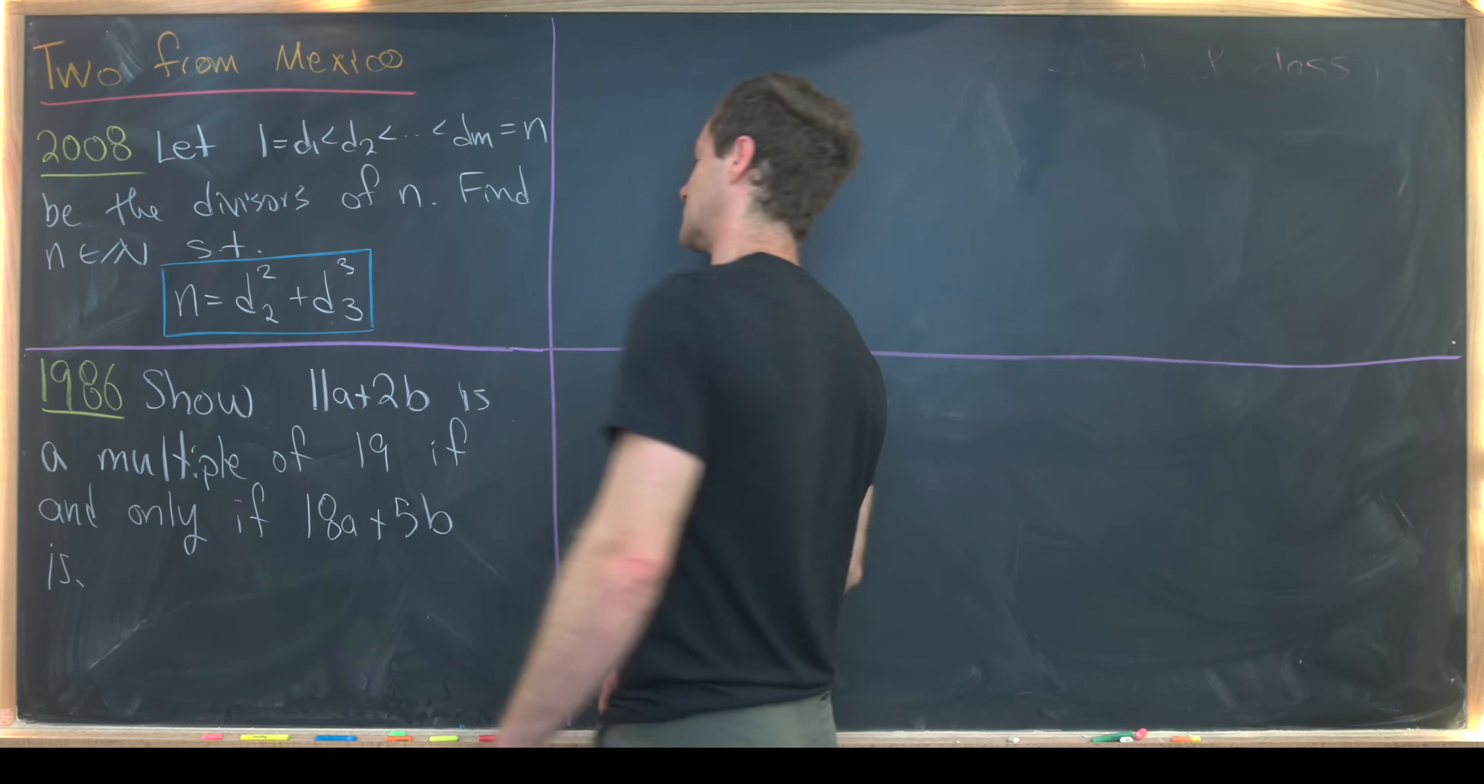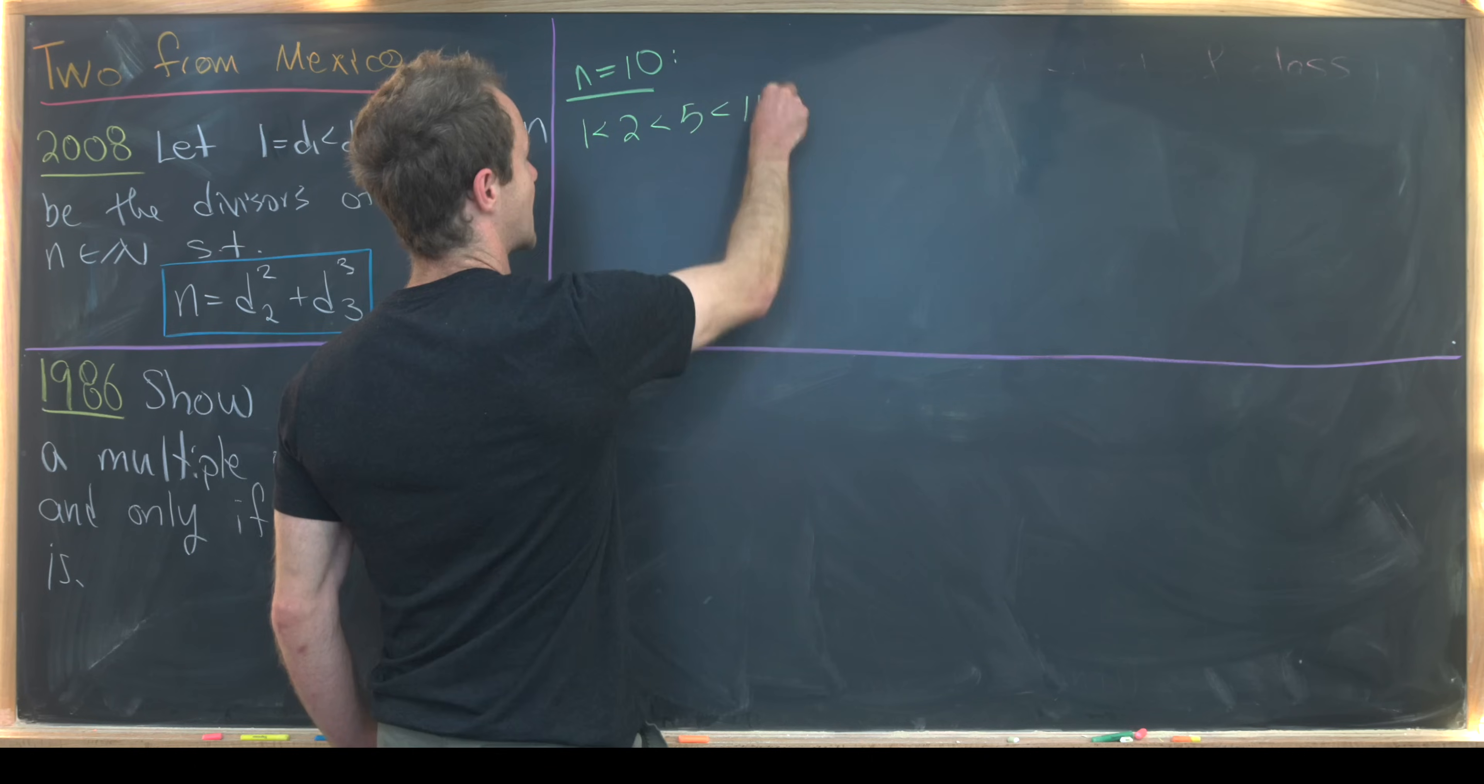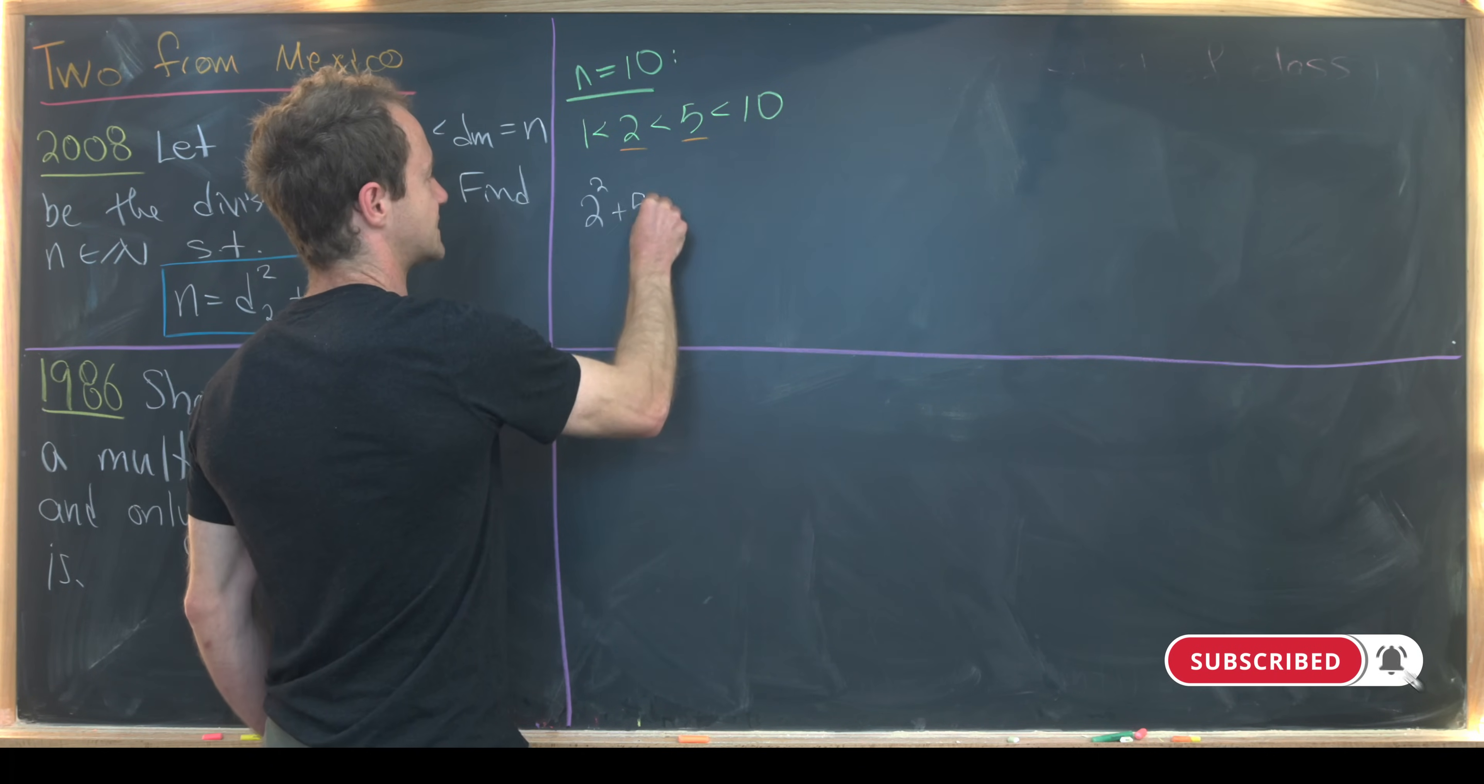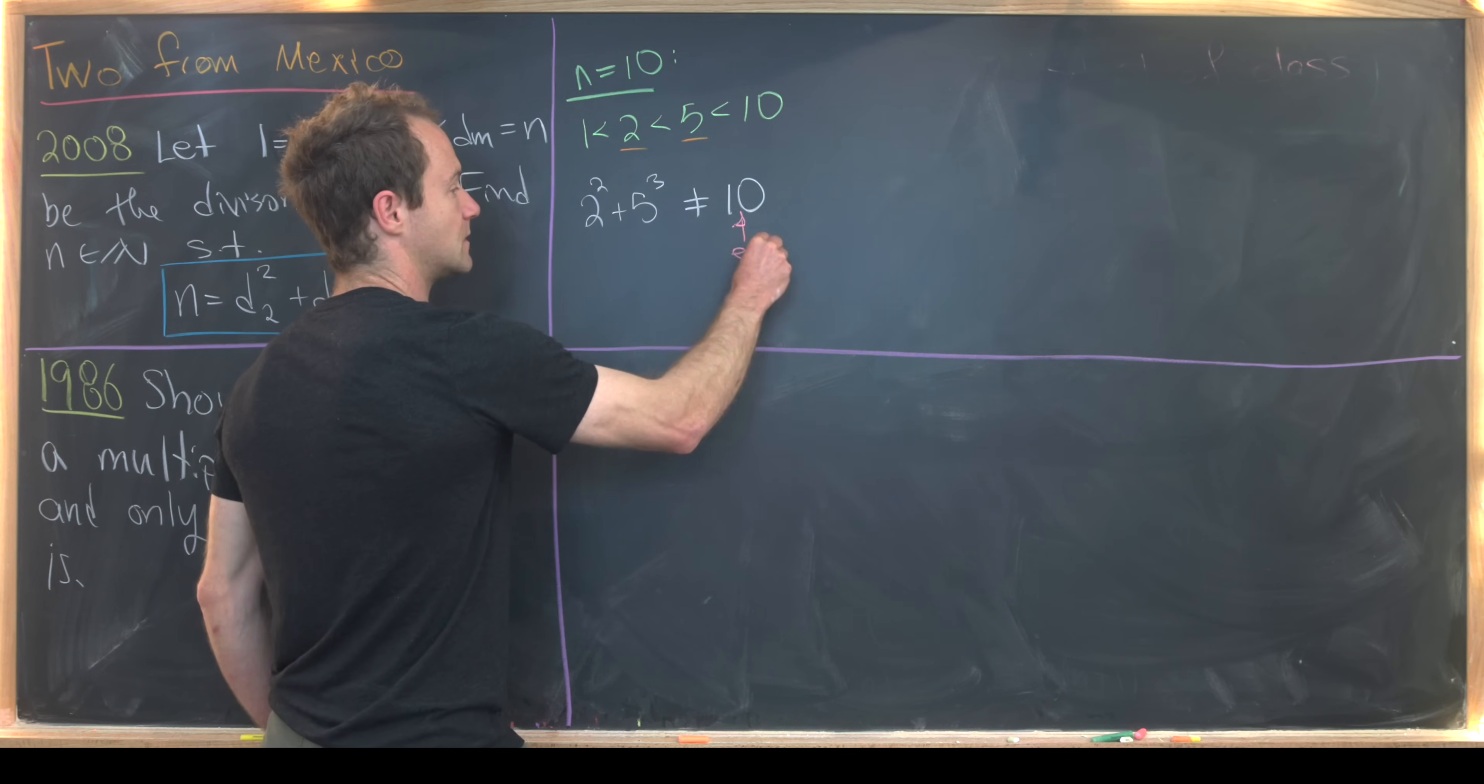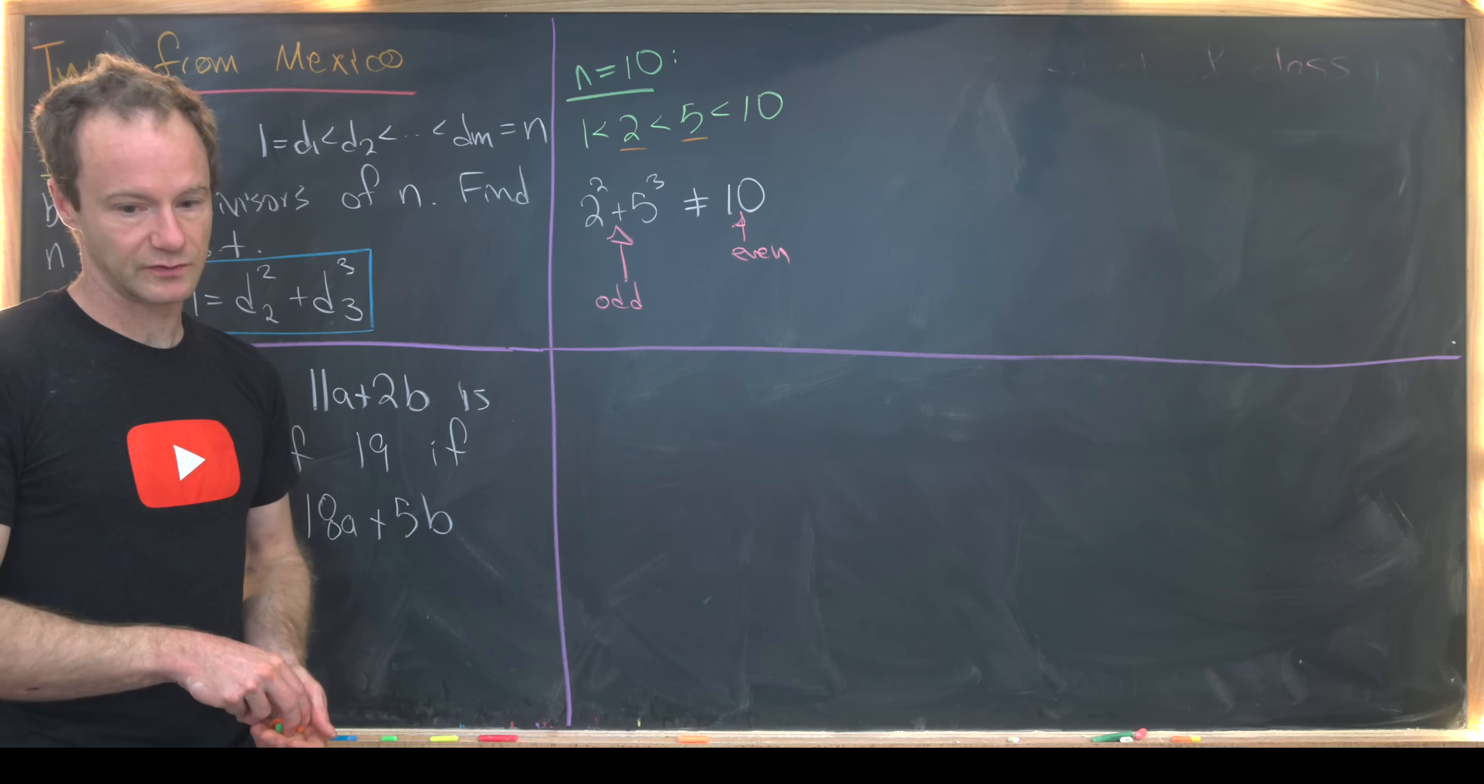Now let's look at a couple of examples before we look at a solution. Let's look at the example when N is equal to 10. Notice that makes our list 1, 2, 5, and 10. And notice with this setup, our D2 is 2 and our D3 is 5. So notice we'll have 2 squared plus 5 cubed. Well, that's most definitely not equal to 10. It's way bigger than 10. But I don't really want to worry about how it's much larger than 10. I want to notice that it's the wrong parity. This side is even, whereas this side is odd. We can see that this side is odd because it's an even number plus an odd number. So that's really a better indicator that they're not equal than their size for the purposes of writing down a general proof.